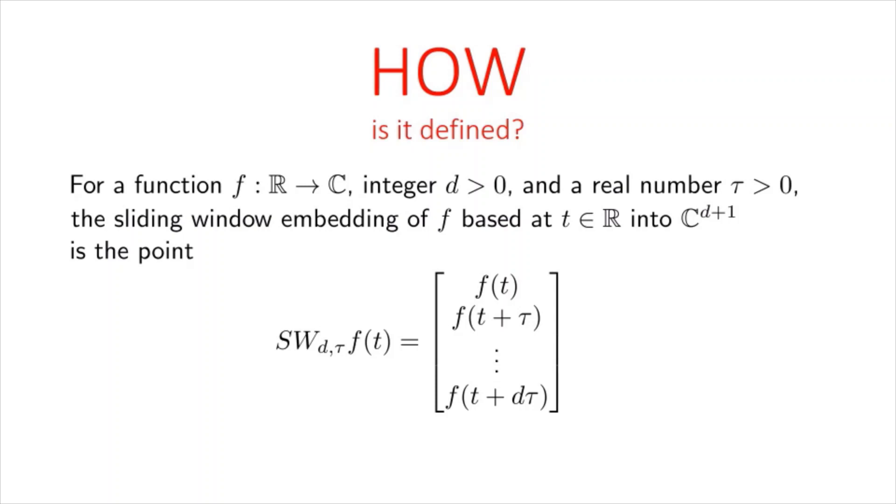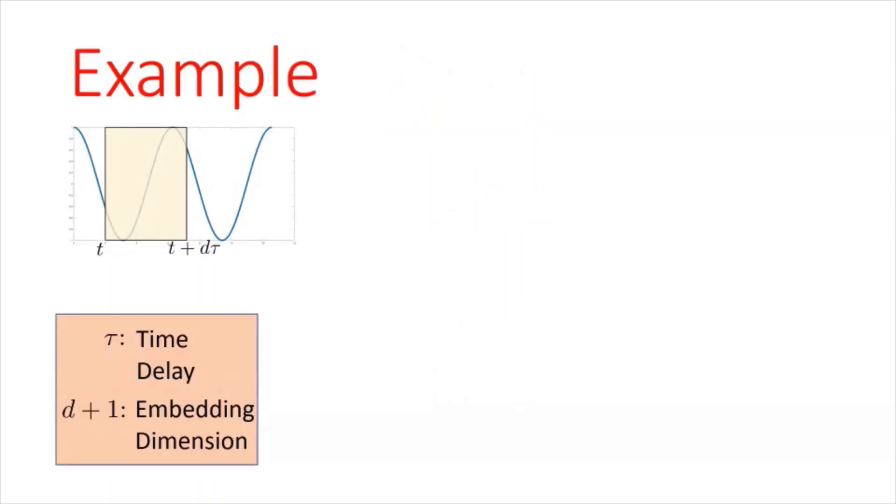Now let's break this definition down into pictures to understand it a little bit. So what we are computing the following. So let's say we have a function. What we do, we fix a window of size d tau and we place it on the function, let's say starting at time t. And then when we slide this window to the right, we're going to get these different snapshots. So we have a collection of these snapshots and that is what we want to study and say something about the function itself.